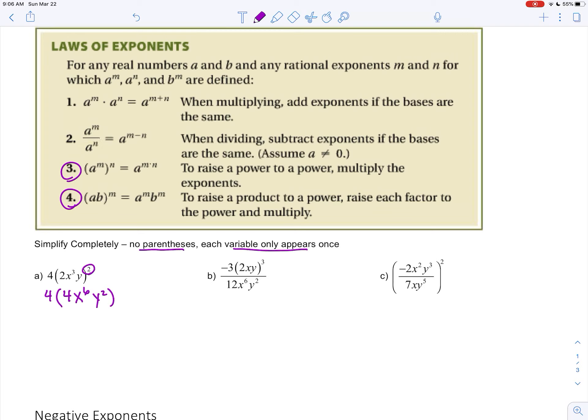So only one more step here to get rid of the parentheses is to multiply, and we have 4 times 4 which is 16. So 16x to the 6th y squared.